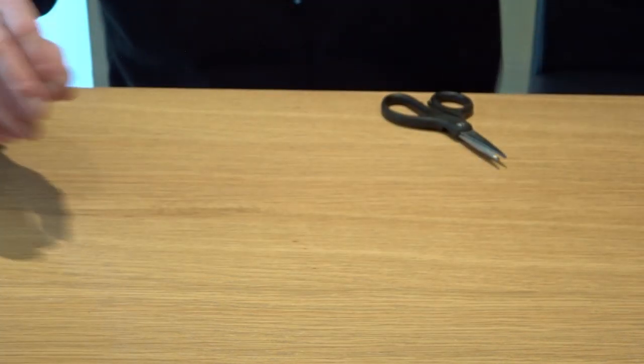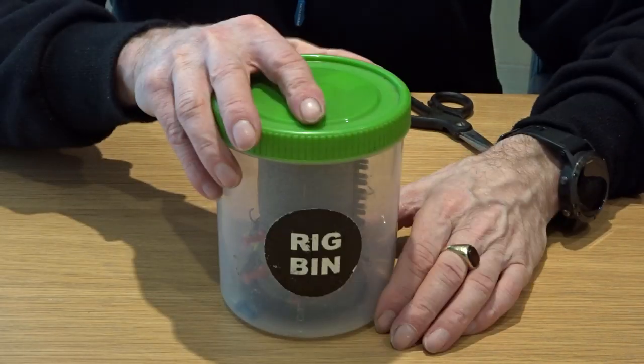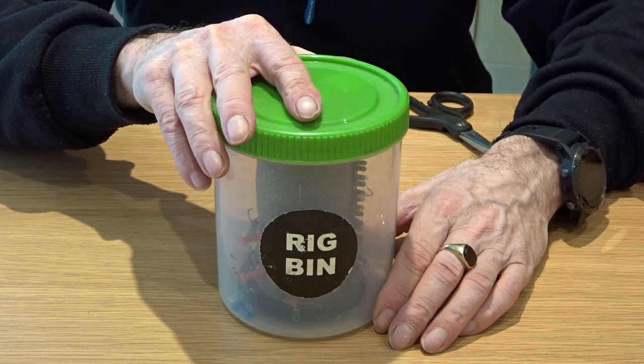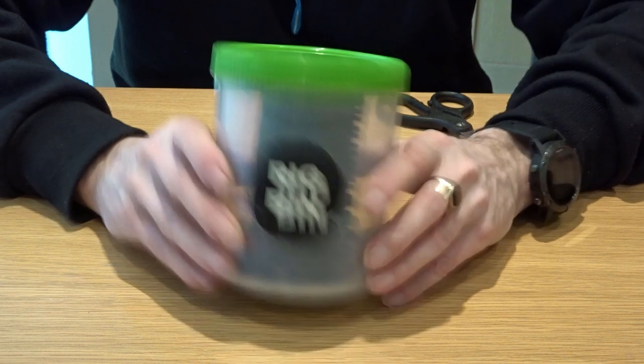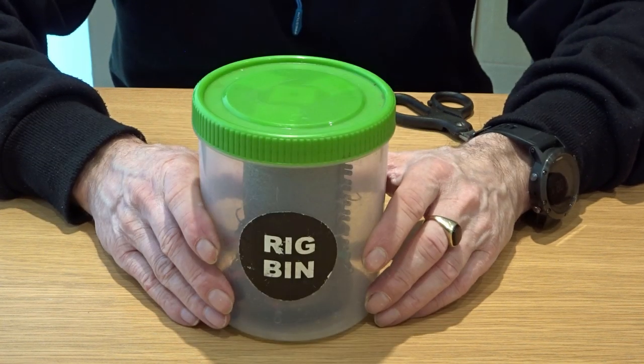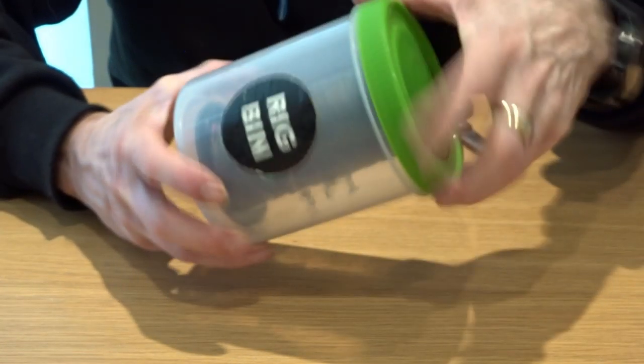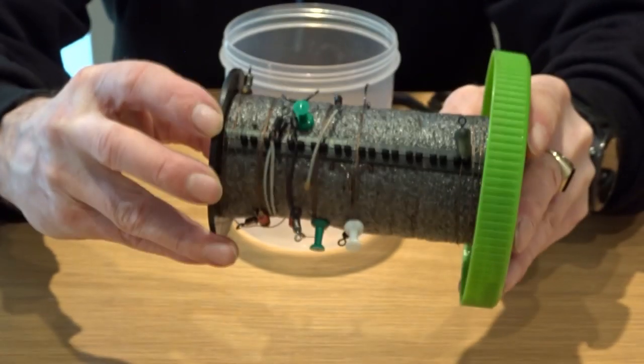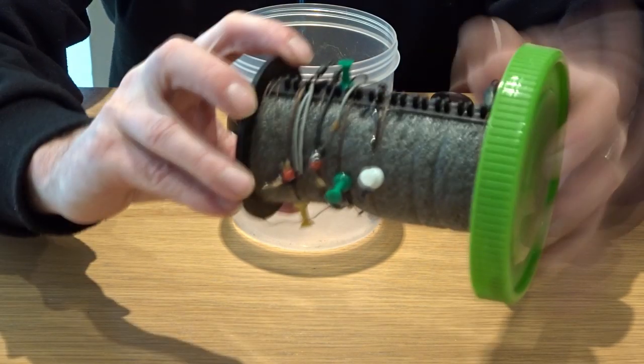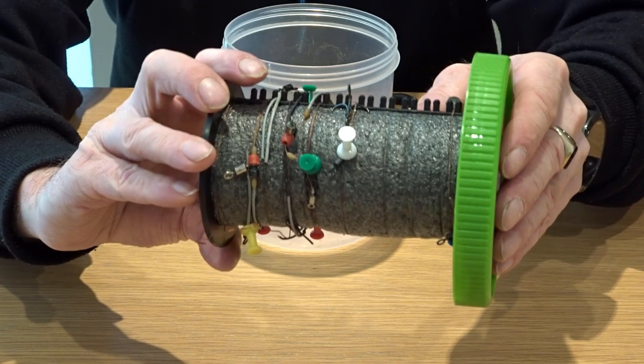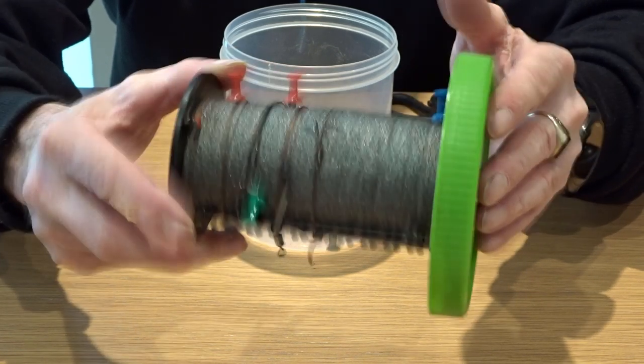The last thing you need is to be able to store that safely, because those hooks are sharp and they'll get in your fingers. Believe me, and they hurt. So you need one of these rig bins or something like this, a piece of foam, something that will store your hooks away safely. And you can just wind your rigs onto these bins, put a pin in, store them up for later use. And then you're ready to go.